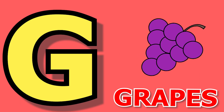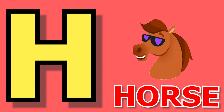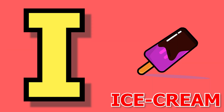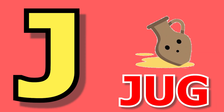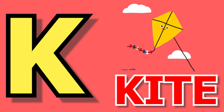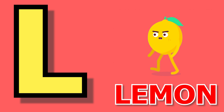G for grapes, H for horse, I for ice cream, J for jug, K for kite.